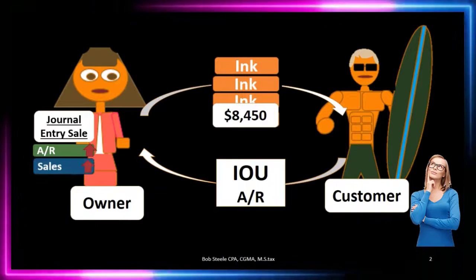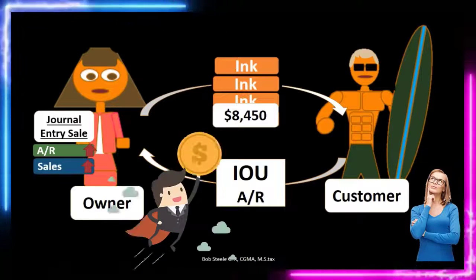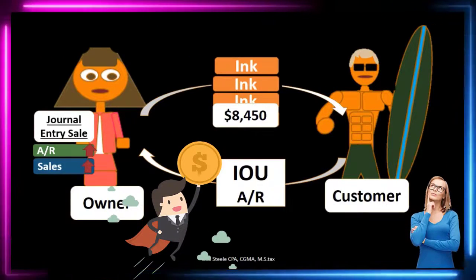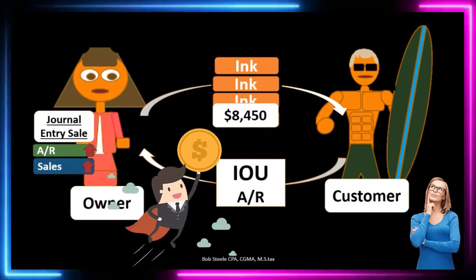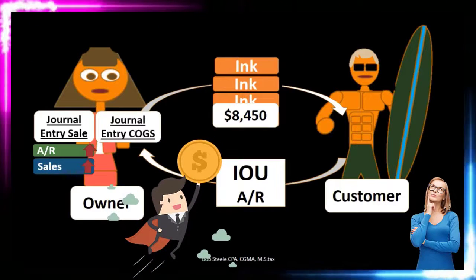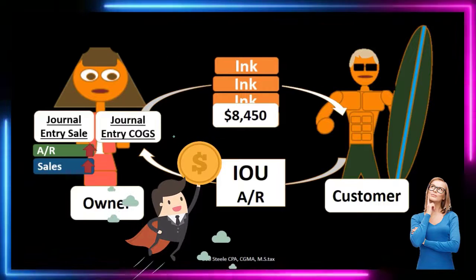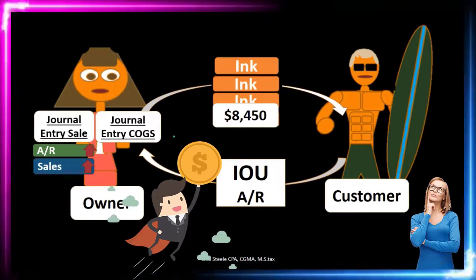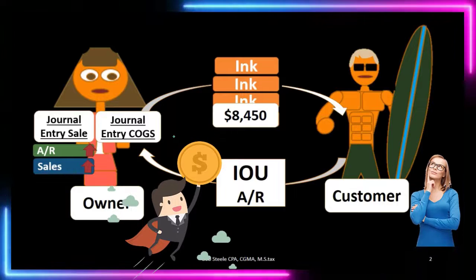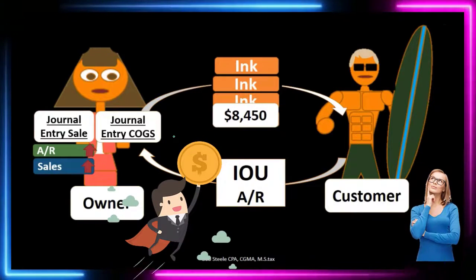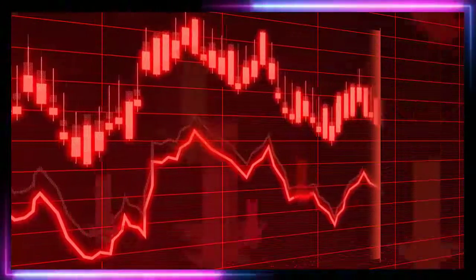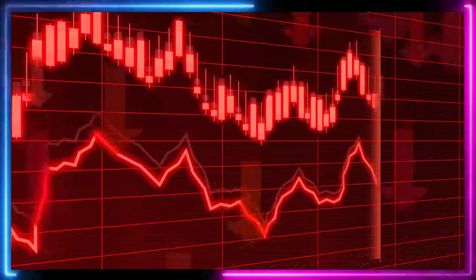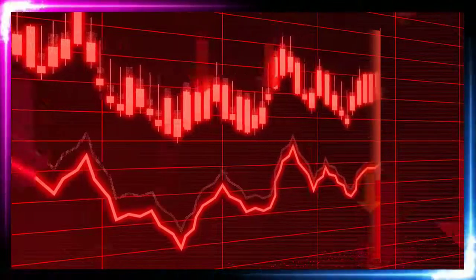We can also say that the sale happened. Sales is equivalent to revenue or income, so income is going up at this point because we completed the job — just as if we were a service company. We then have a separate part of this journal entry for the cost of goods sold side, because in order to complete the job we had to consume or give up the asset of inventory. That consumption of the asset is an expense — our most important expense called cost of goods sold.